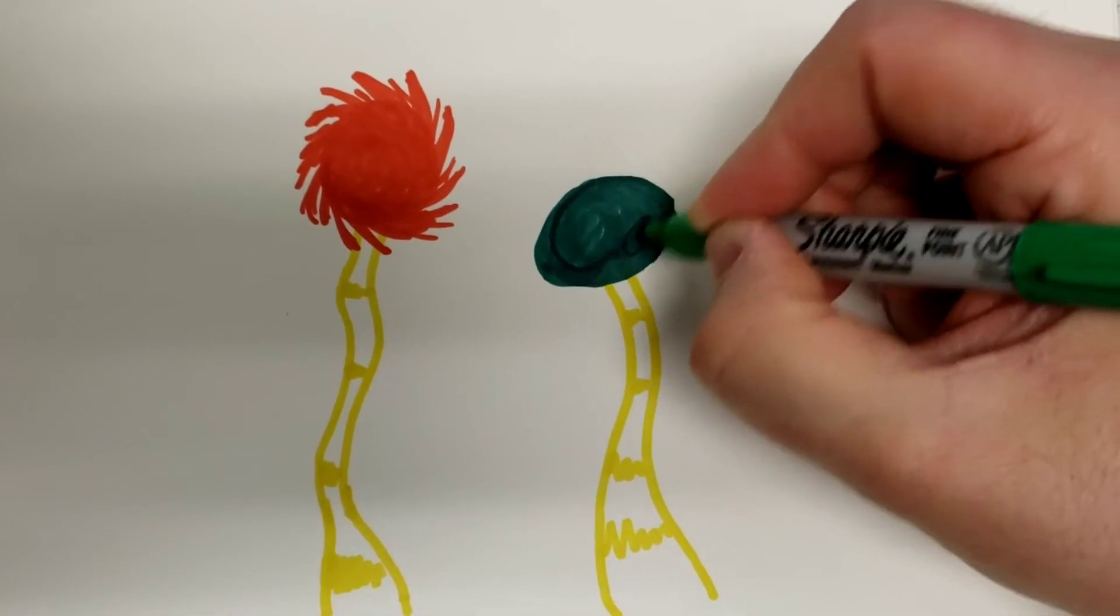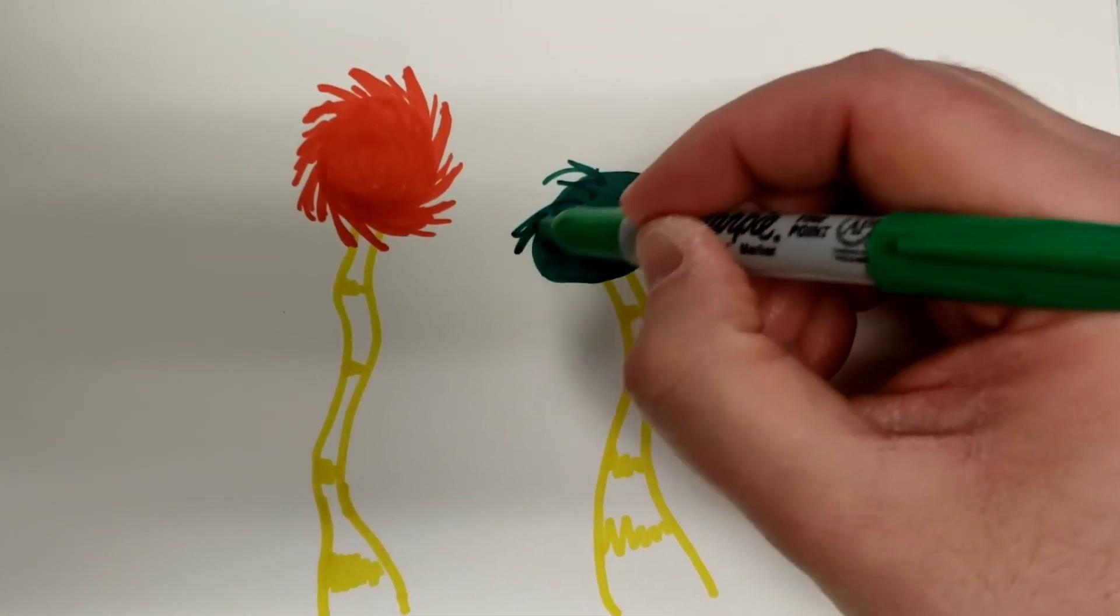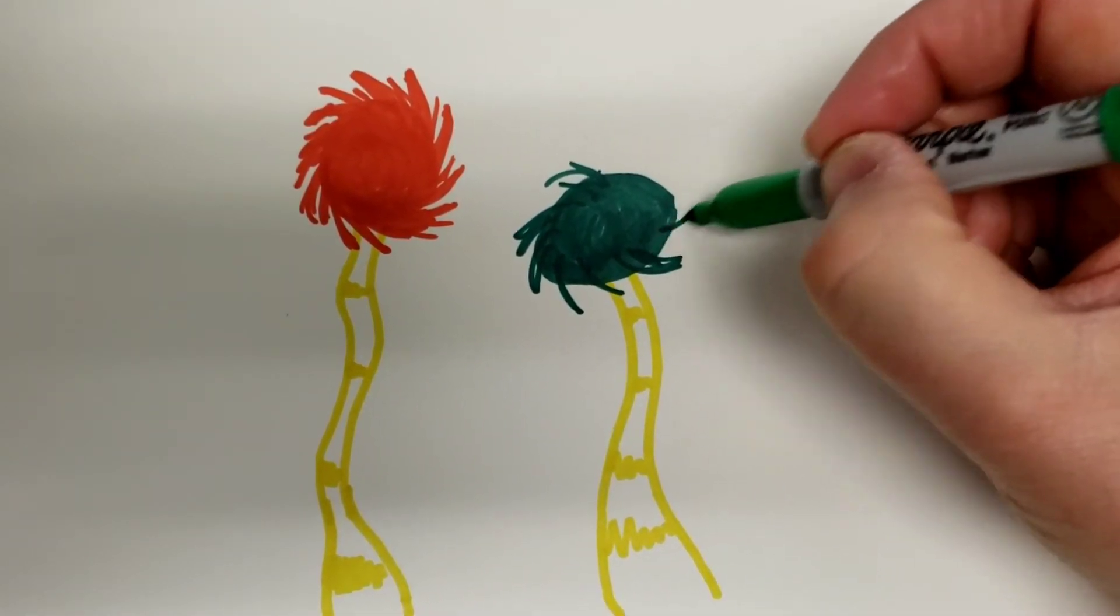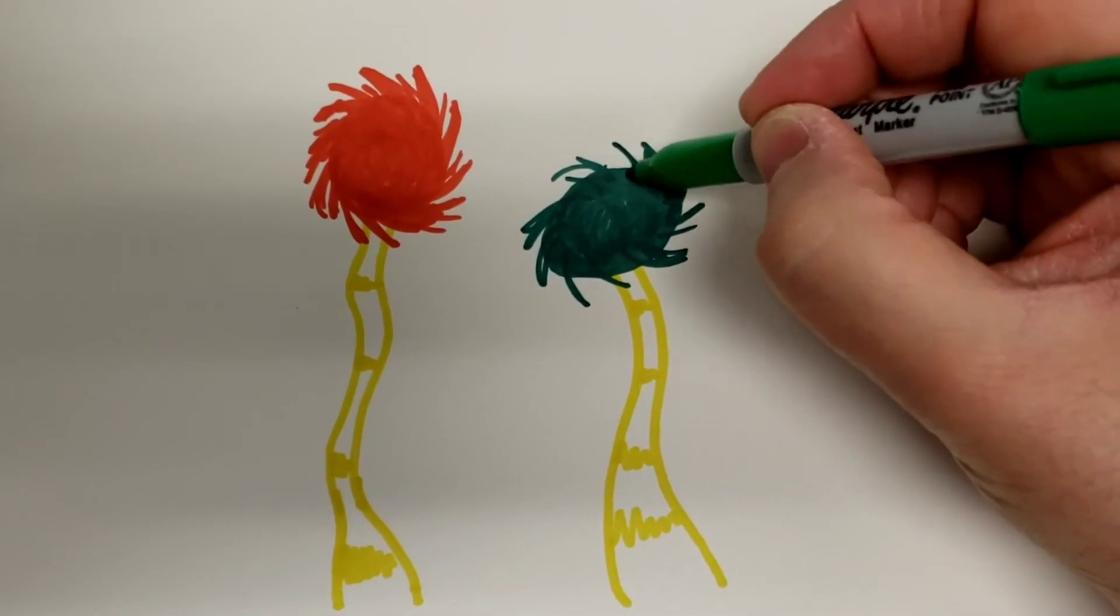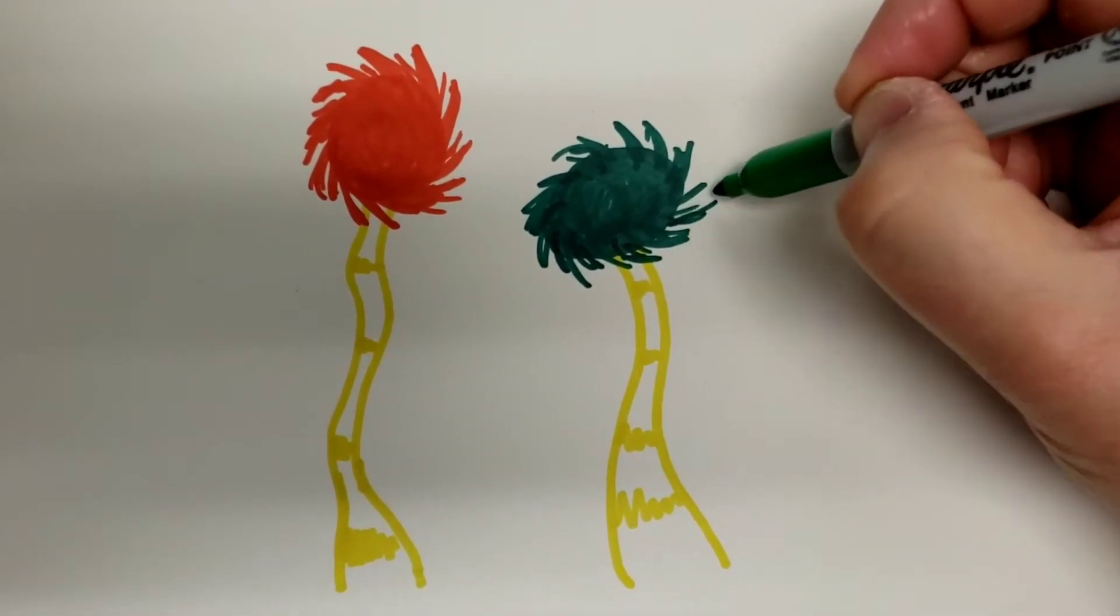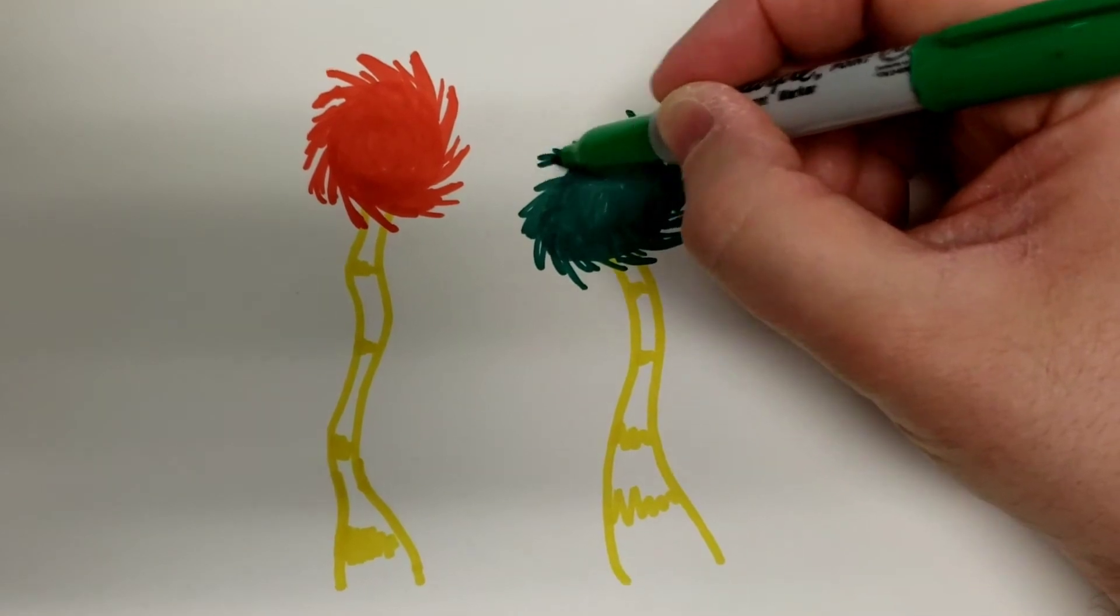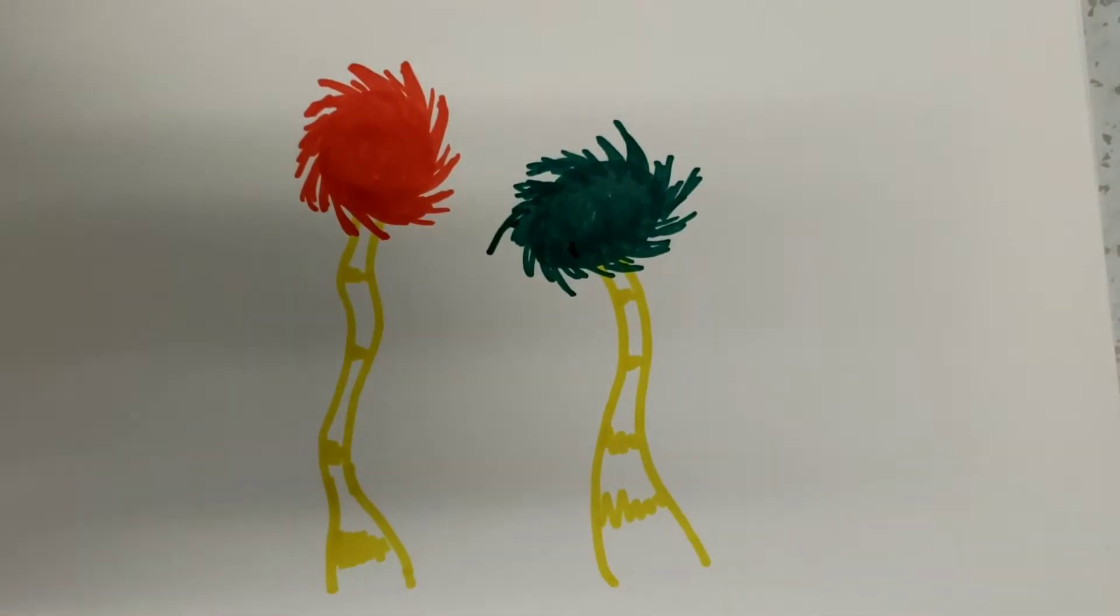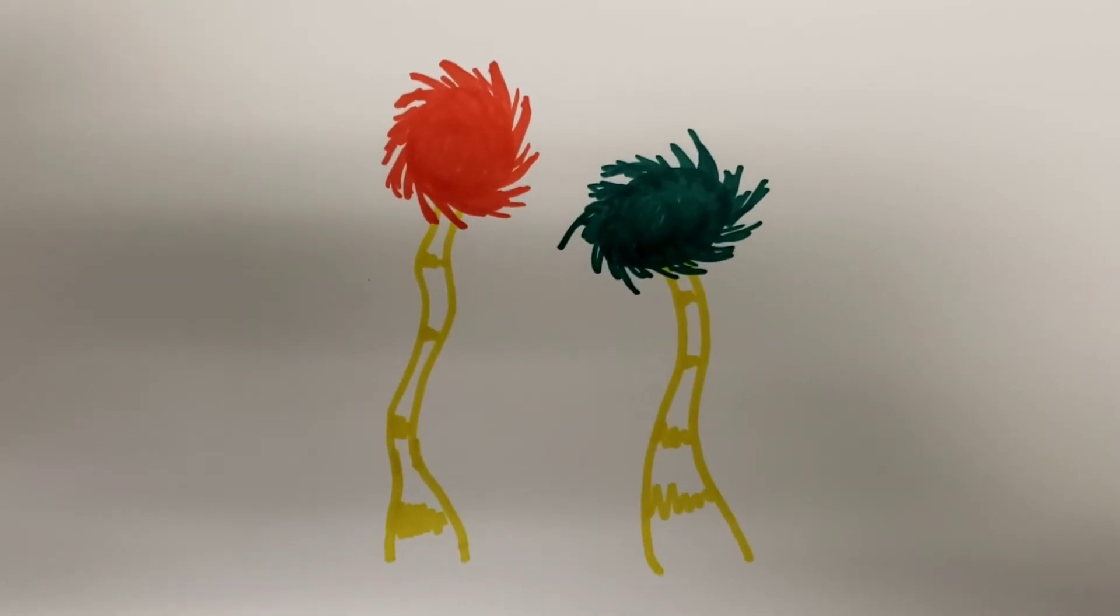The point is it just needs to be kind of rounded. It makes it easier to do that part and then come out. Make some thick and thin, and just go around, make it a little squiggly. There you go, and now you have two Truffula trees.